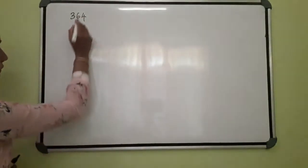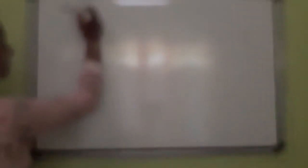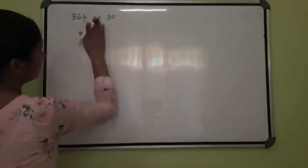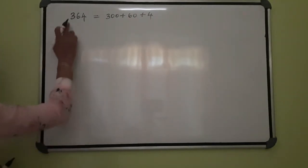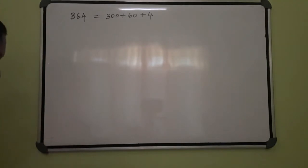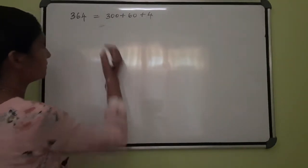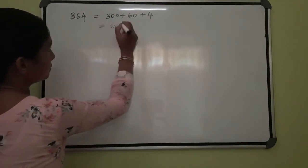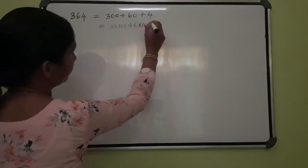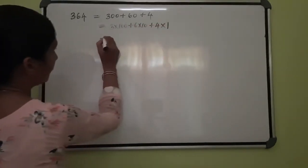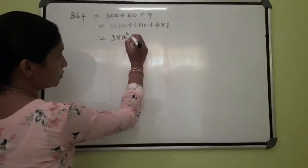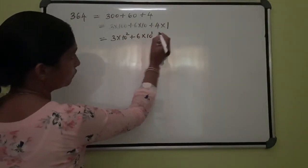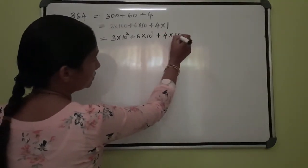How can I construct a number? Consider one number as 364. How can you separate this number? This is equal to 300 plus 60 plus 4. That means this is in the 100th place, this is in the 10th place, this is in the 1st place. Again I will write: 3 into 100 plus 6 into 10 plus 4 into 1. Then once more: 3 into 10 raised to 2, plus 6 into 10 raised to 1, plus 4 into 10 raised to 0.